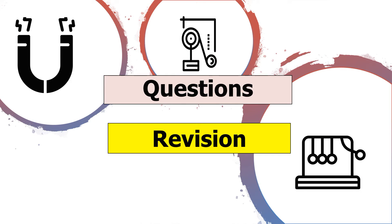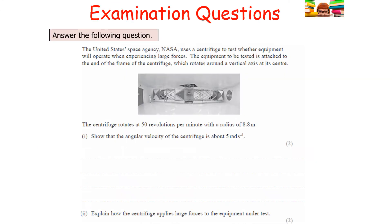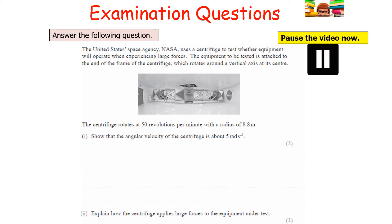Let's start by answering some questions on periodic motion. The first question: NASA uses a centrifuge to test whether equipment will operate when experiencing large forces. The equipment is attached to the end of the frame of a centrifuge, which rotates around a vertical axis at its centre. The centrifuge rotates at 50 revolutions per minute with a radius of 8.8 metres, so that the angular velocity is about 5 radians per second. Explain how the centrifuge applies large forces to the equipment under test. Pause the video now, then unpause when you want to go through your answer.